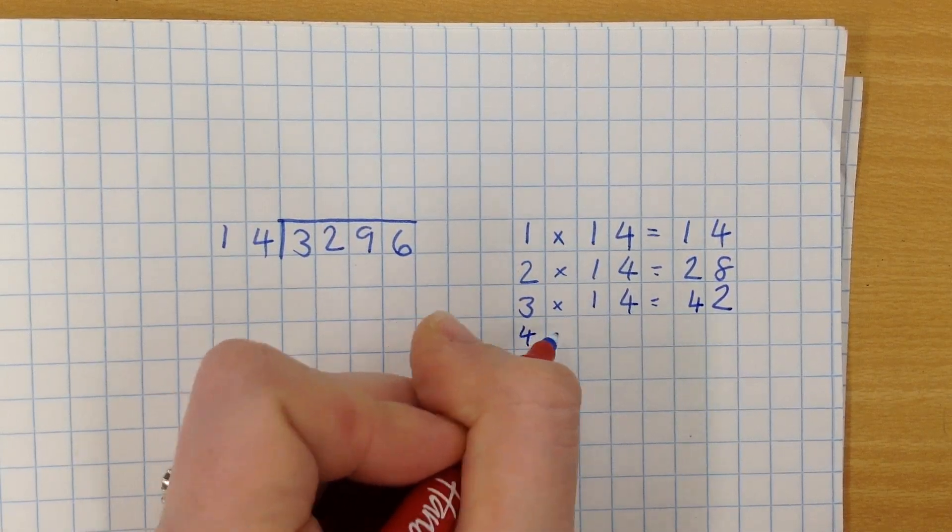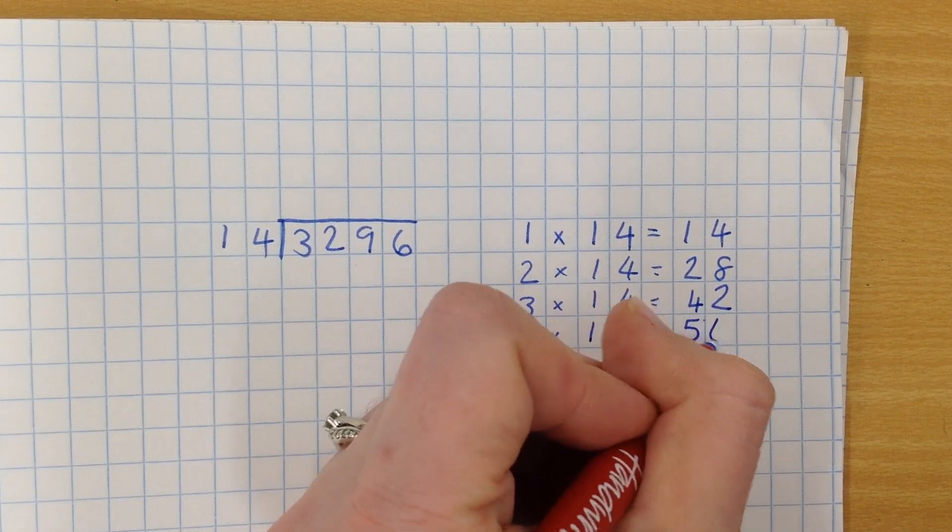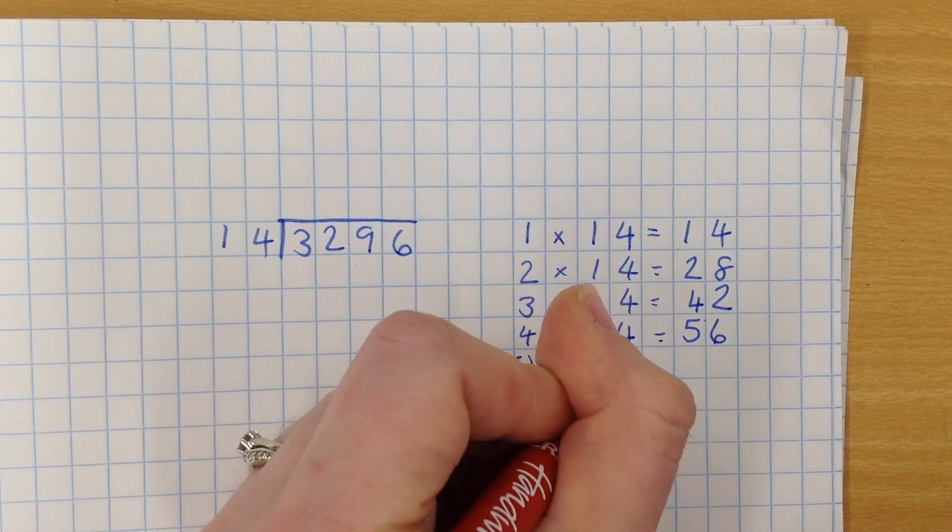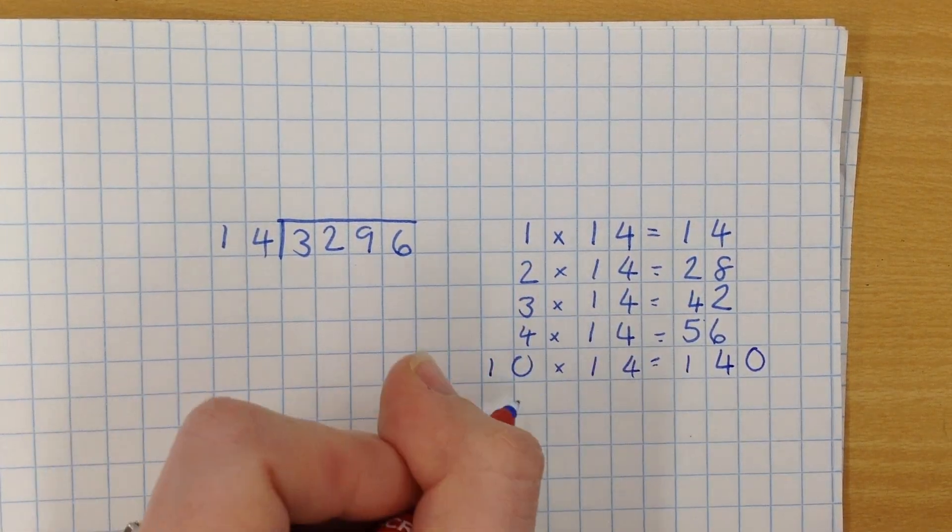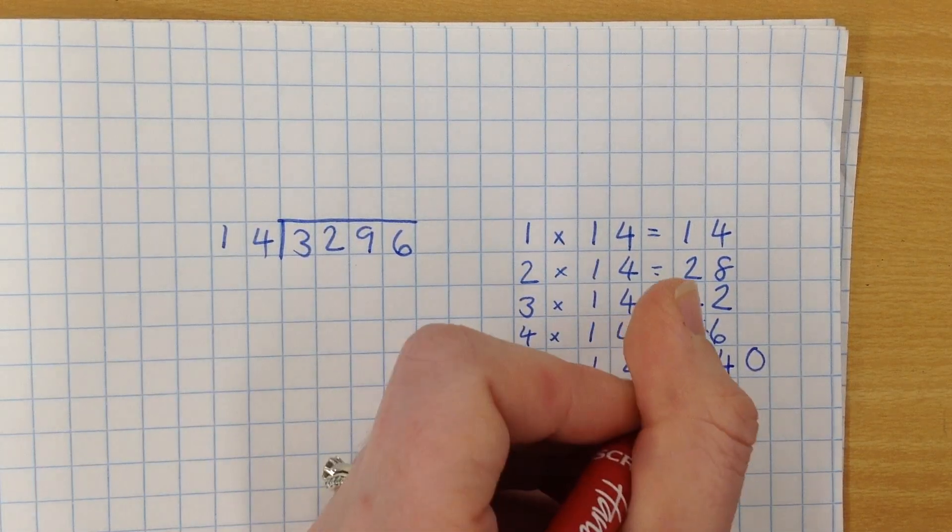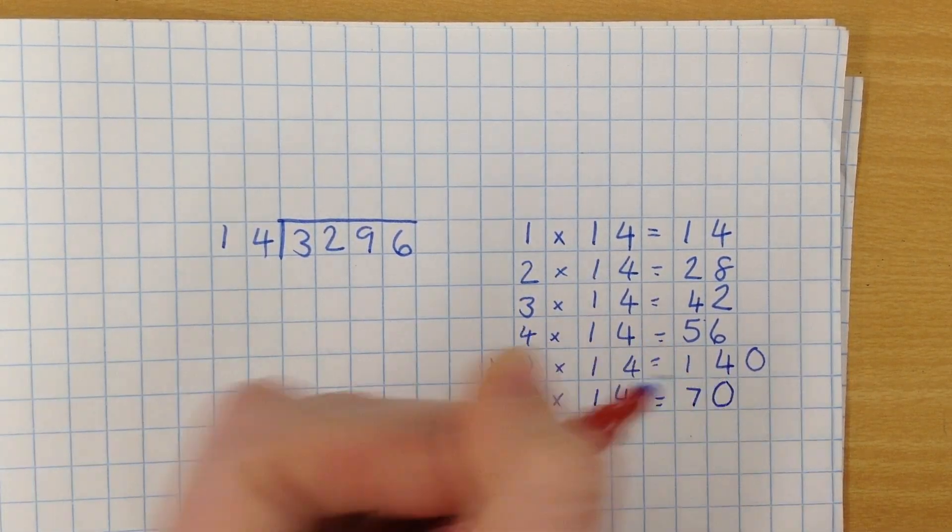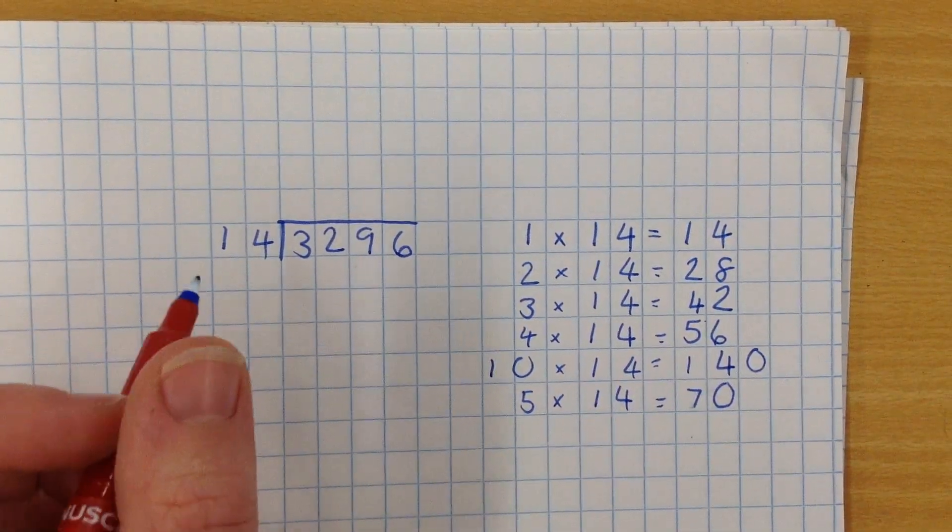So I've got, I'll do up to 4, and then I might do 10 because that will help me work out 5 times, which is going to be half of that, and if I need to, I can always come back to this and add to it as I go along.